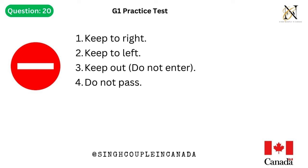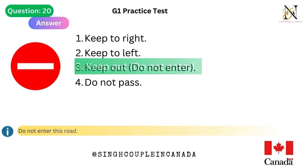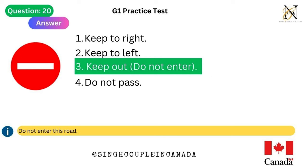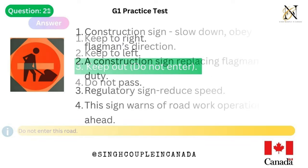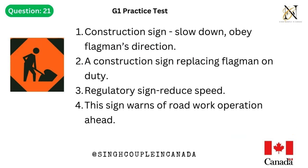Question 20. This traffic sign means: 1. Keep to right. 2. Keep to left. 3. Keep out, do not enter. 4. Do not pass. Answer is 3. Keep out, do not enter — do not enter this road.